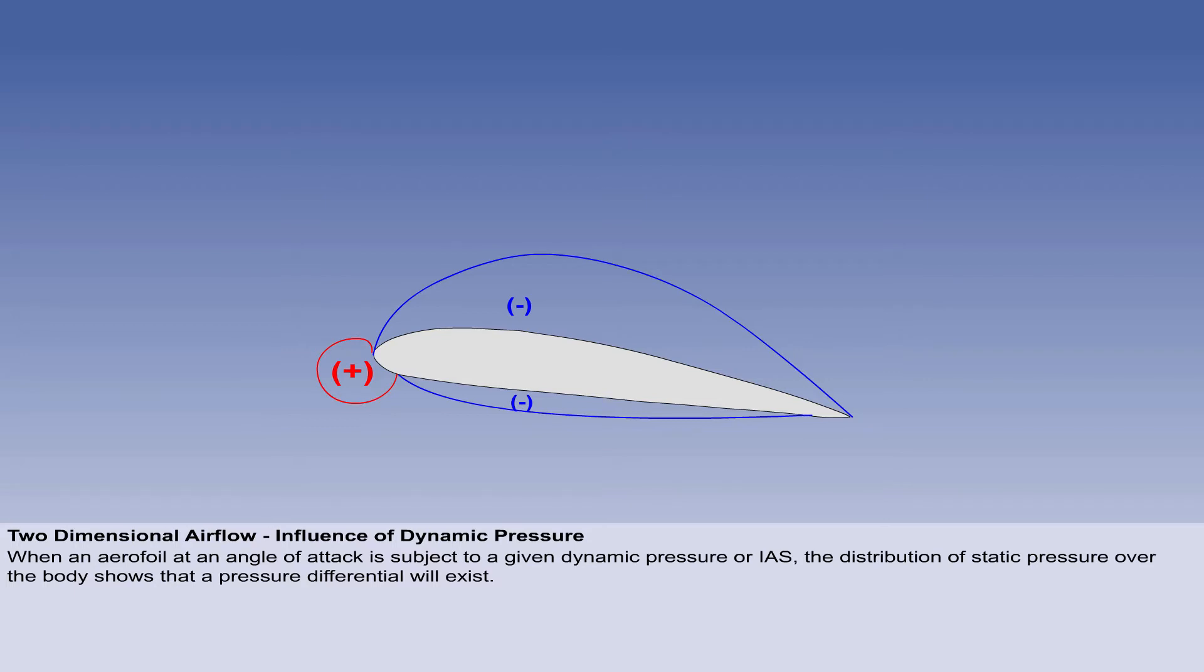On the screen, you can see an aerofoil at a representative angle of attack, subject to a given dynamic pressure, or IAS. The pressure distribution shows that if the static pressure on one side of a body is reduced more than on the other side, a pressure differential will exist.